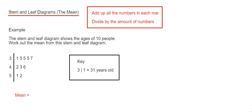The first thing we need to do is add up the ages of all these people in the stem and leaf diagram. On this first row we have all the numbers in the 30s. Our first one is 31 and our next one is 35. Then we've got another 35, another 35, and 37.